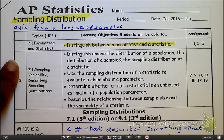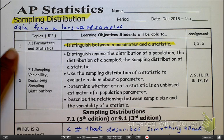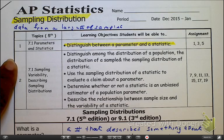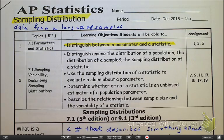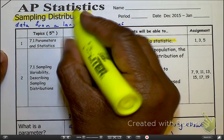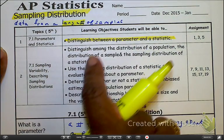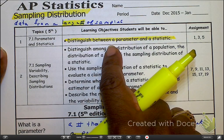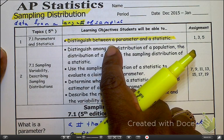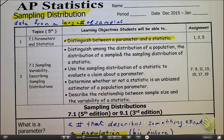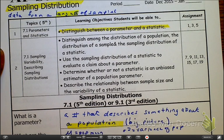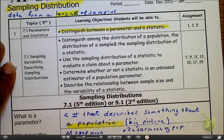And as we consider a sampling distribution, like I said, it's data from a large number of samples. So with that being said, we've got to come up with some new language for our statistics. Our objective is going to be to distinguish the difference between a parameter and statistics. First of all, a parameter.